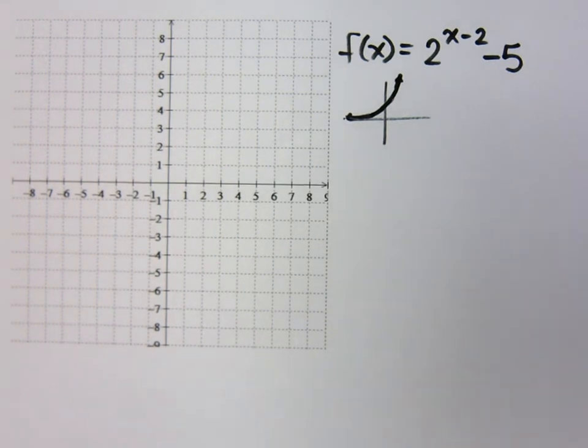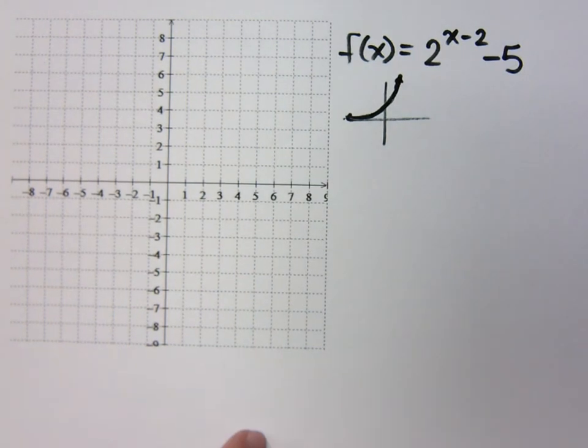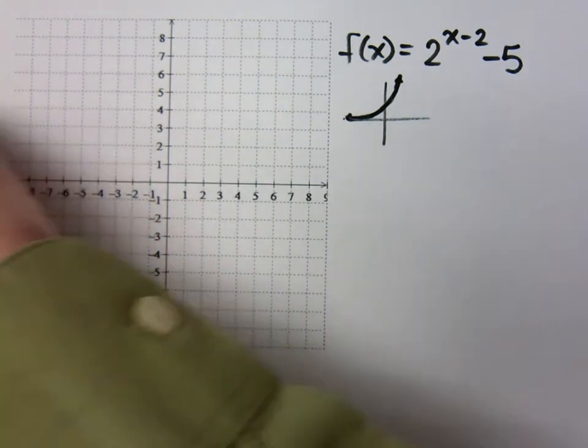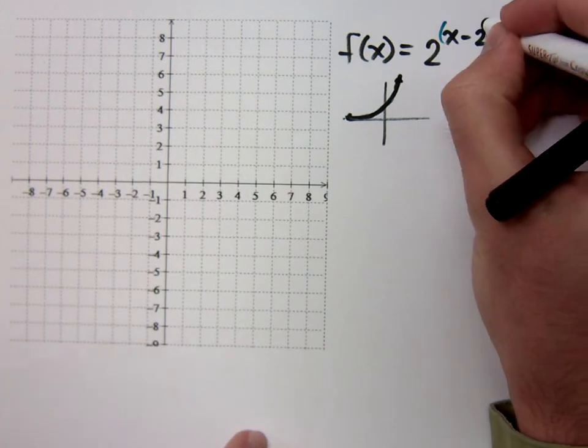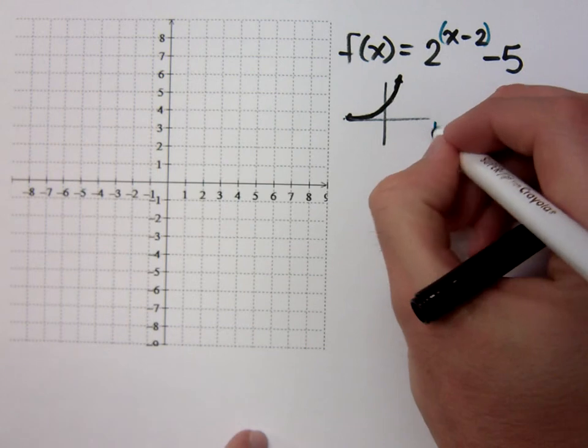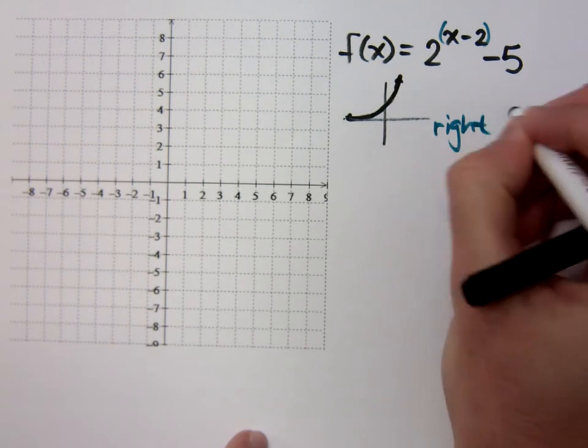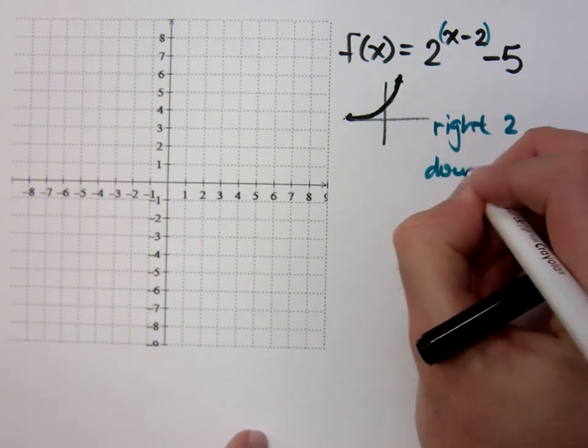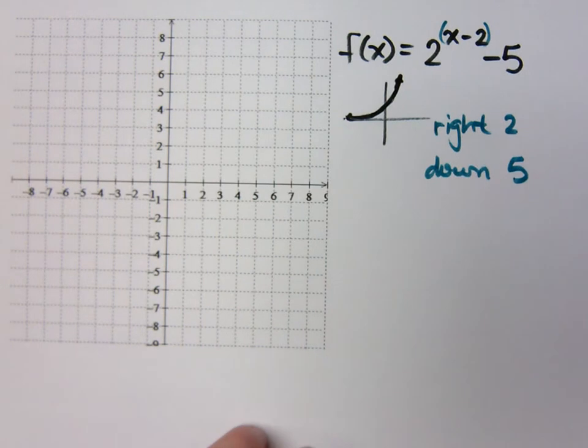Now, what have I done to this guy? If I look up here, I can see this is being inside my parentheses, inside my exponential function. So that means I'm going to the right 2 and I'm going down 5. So make sure that you make those appropriate translations.